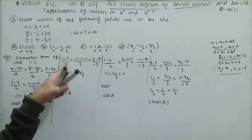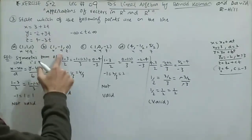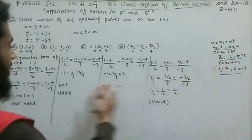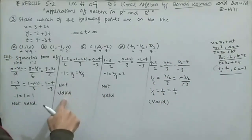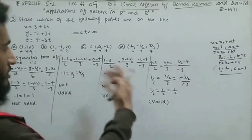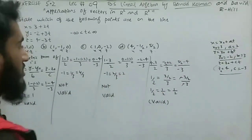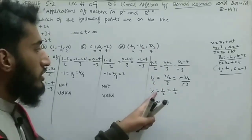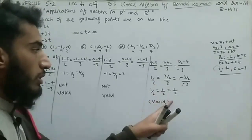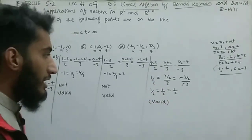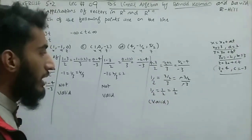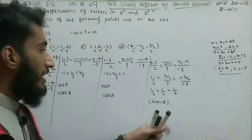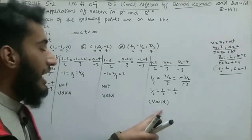For part (b), substituting the given point is not valid. Part (c) is also not valid. For part (d), substituting gives 1/2 = 1/2 = 1/2 — all equal — so part (d) is valid and this point lies on the line.